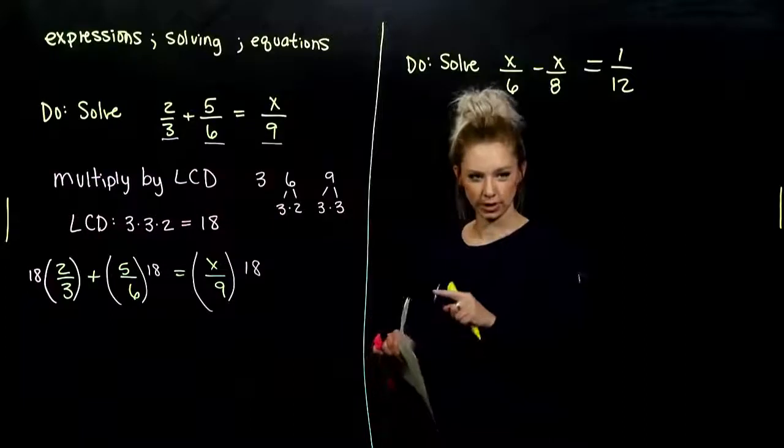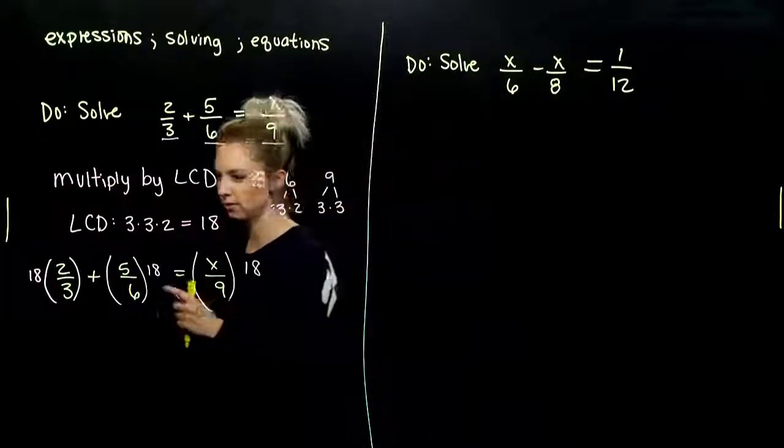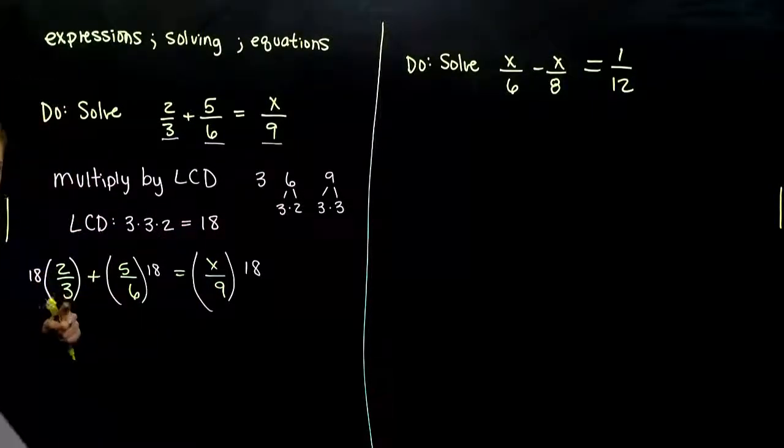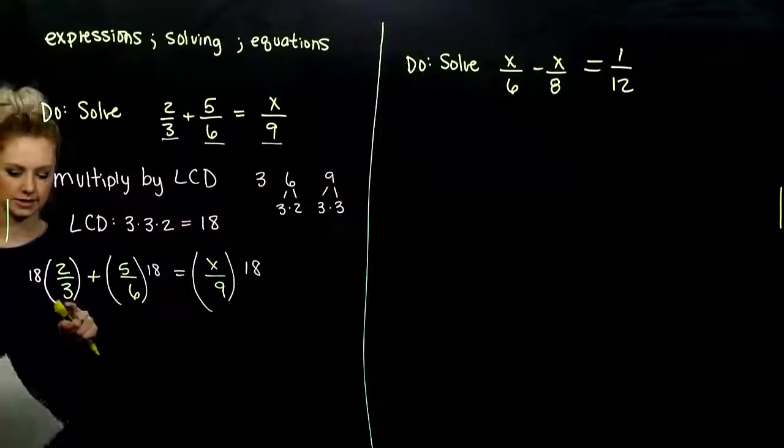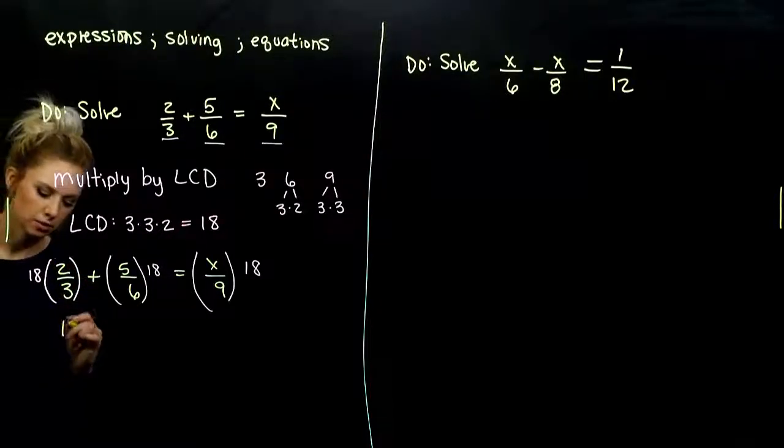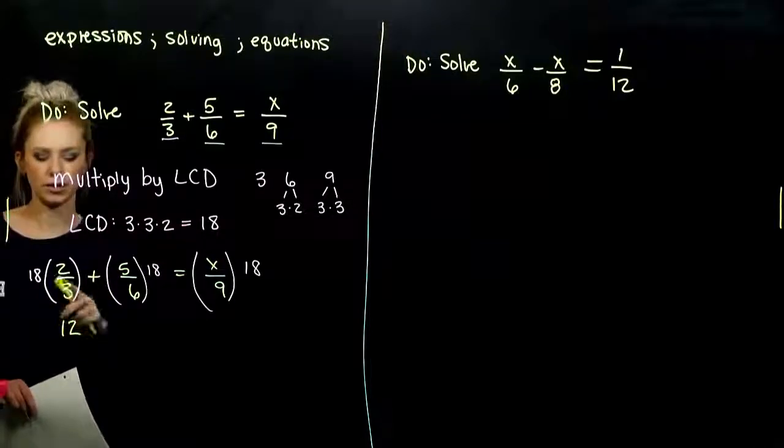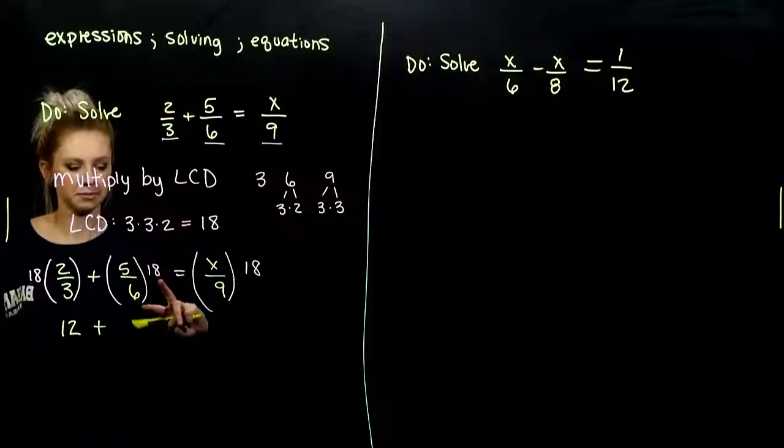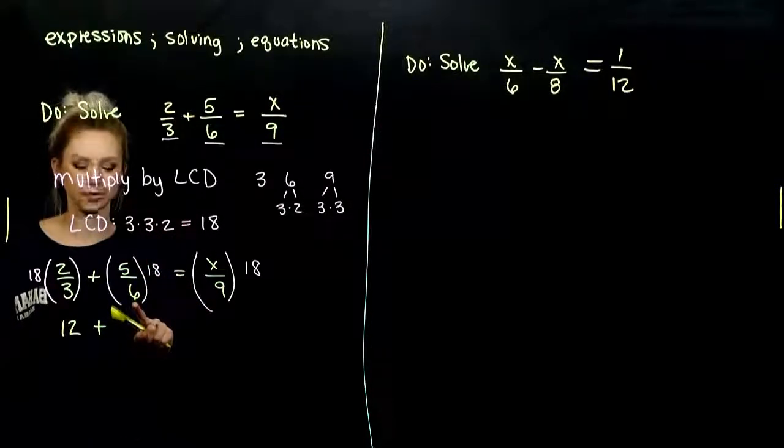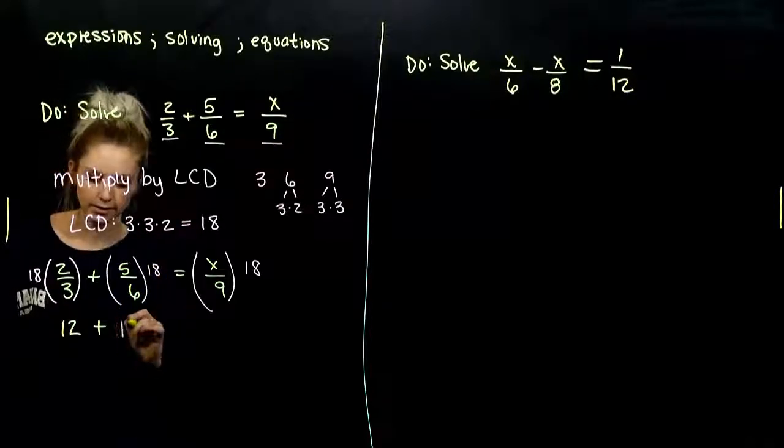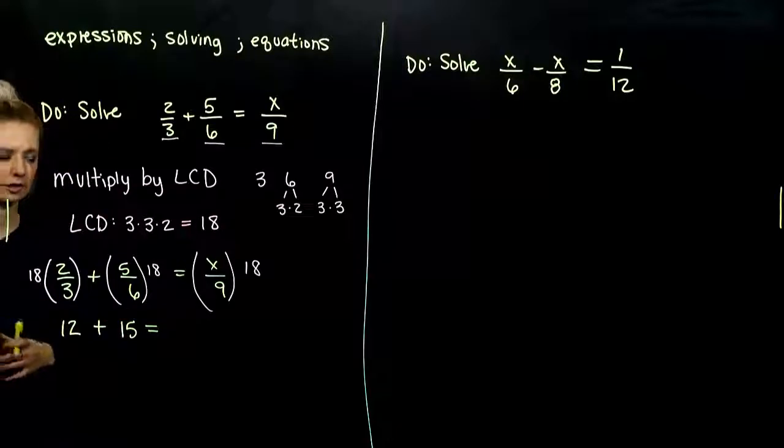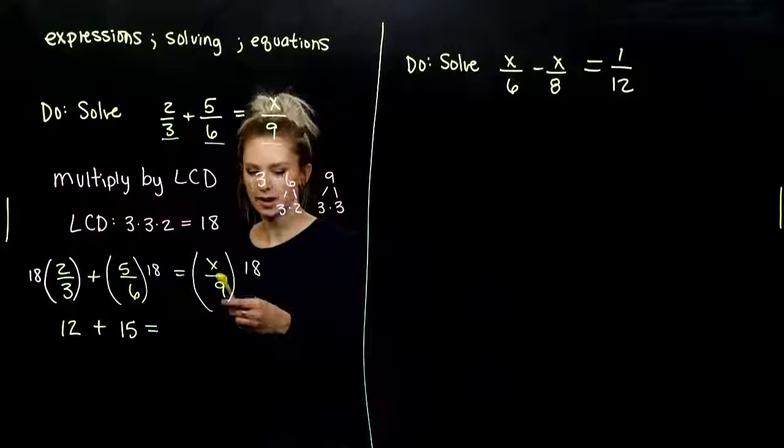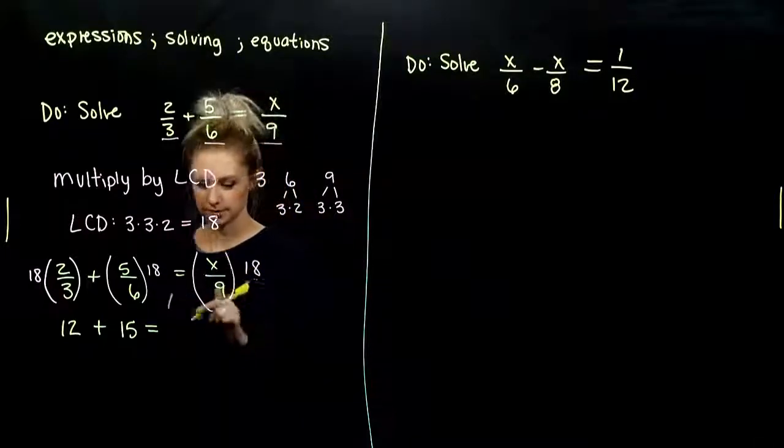So we want to do that division first, since it's going to make the numbers easier to work with. 18 is designed to be divisible by each of these. So 18 divided by 3 gives me 6, 6 times 2 gives me 12. And over here, 18 divided by 6 is 3, 3 times 5 is 15. Got rid of all the fractions on the left. And the same story for on the right. 18 divided by 9 is 2, 2 times x is 2x.